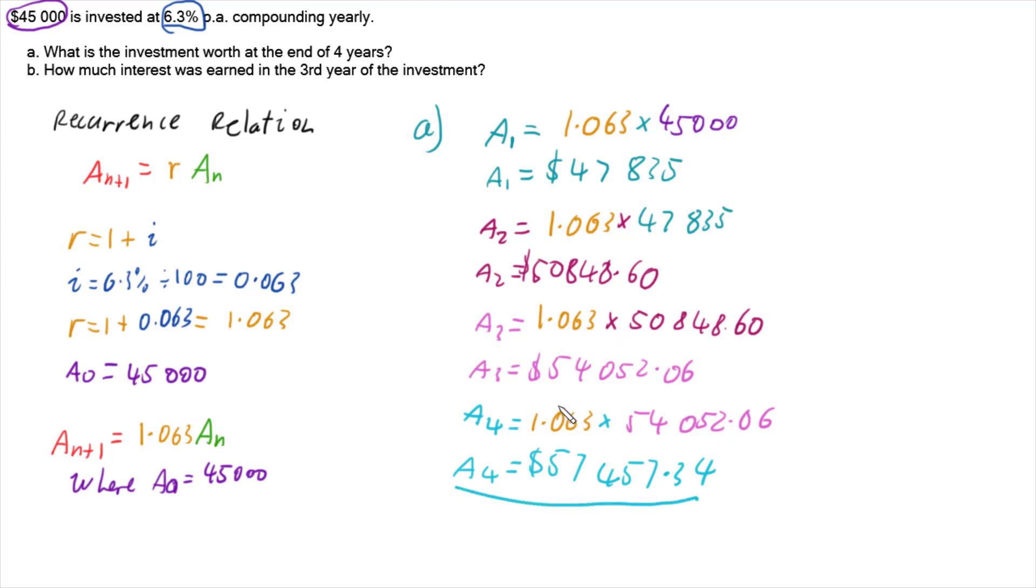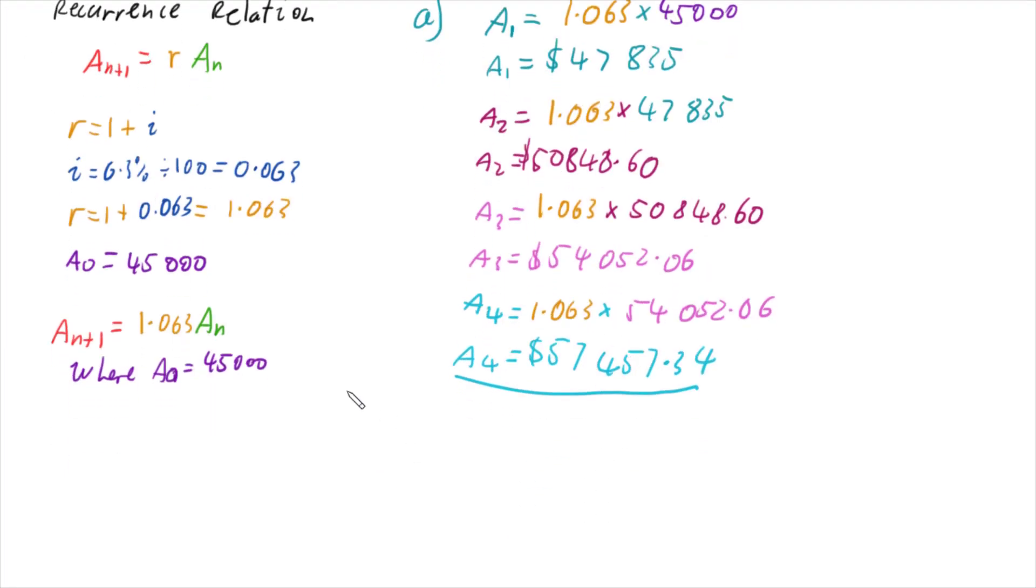So the investment's value at the end of four years is that amount, and we would write that. The investment is worth $57,457.34 at the end of four years.